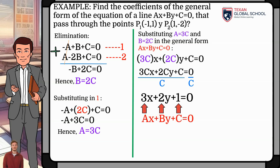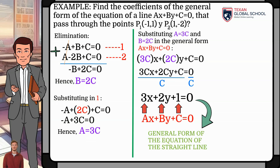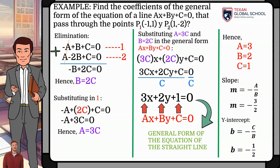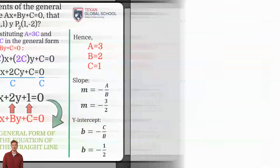In this way, the coefficients are a = 3, b = 2, and c = 1. We can verify that the equation is correct by substituting the abscissa or ordinate of each point and verifying that the other coordinate value is obtained. Finally, let us calculate the slope as negative a over b — in this case, negative 3 halves — and the y-intercept as negative c over b, that is, negative 1 half.